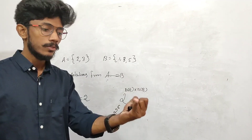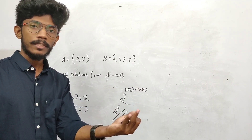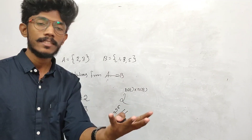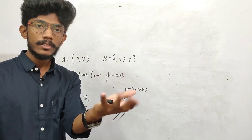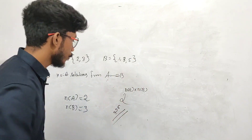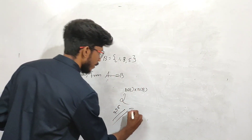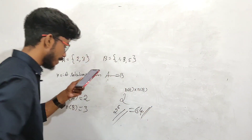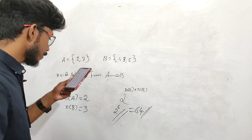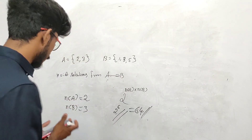That is 2 rise to 6. 2 rise to 6 is 2, 4, 8, 16, 32, 64. So 2 rise to 6 is 64. What is the correct answer? It is option 3.